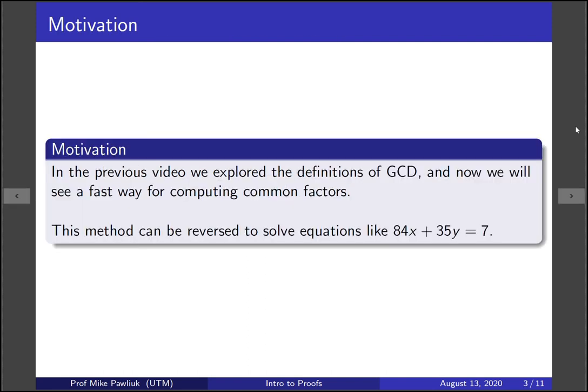Our motivation is that in the previous video we explored the definitions of GCD and LCM, and now we will see a fast way for computing common factors. Then this method can be reversed to solve special types of equations like 84x + 35y = 7.